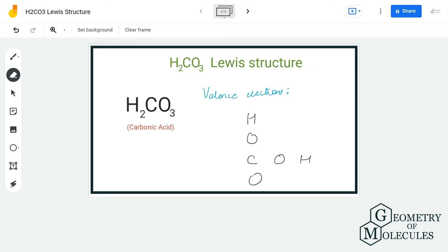Hi guys, welcome back to our channel. In today's video, we're going to help you with the H2CO3 Lewis structure. It is the chemical formula for carbonic acid. To determine this Lewis structure, we will first determine the total number of valence electrons.